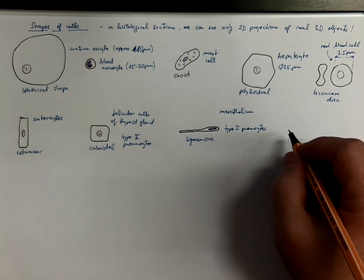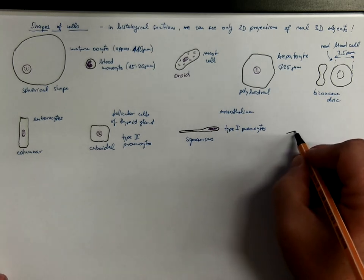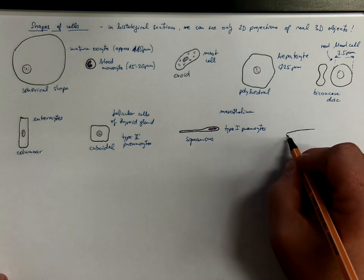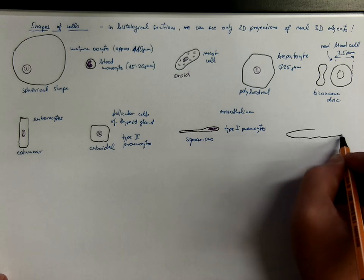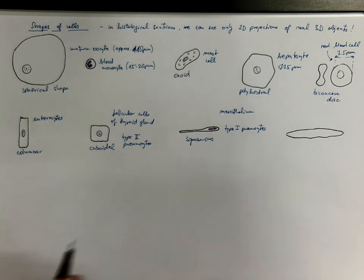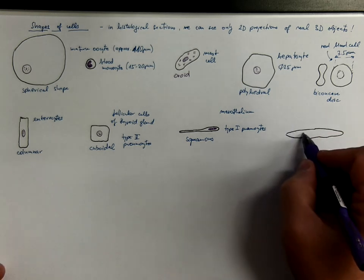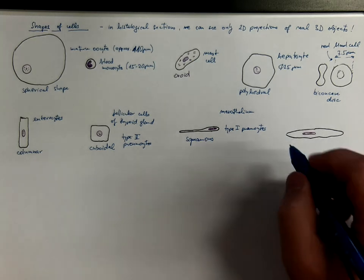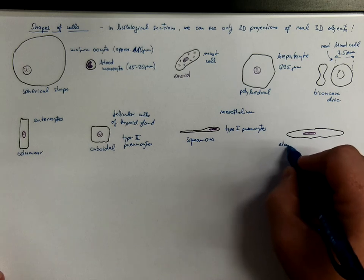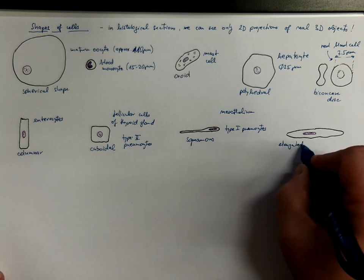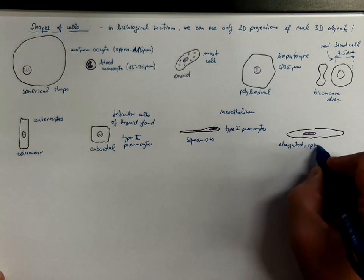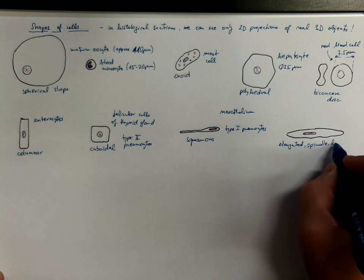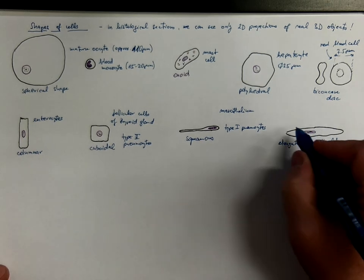Another shape would be elongated or spindle-shaped or spindle-like shape, such as in smooth muscle cells.